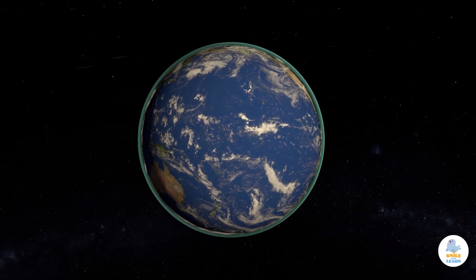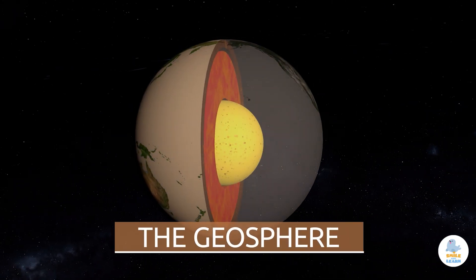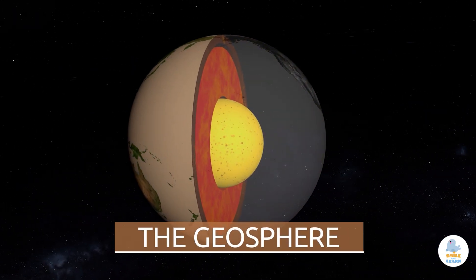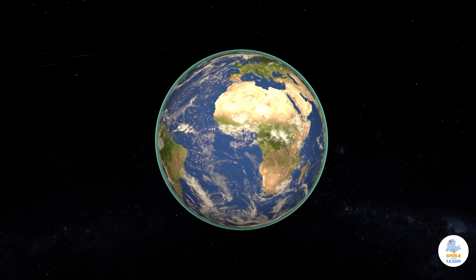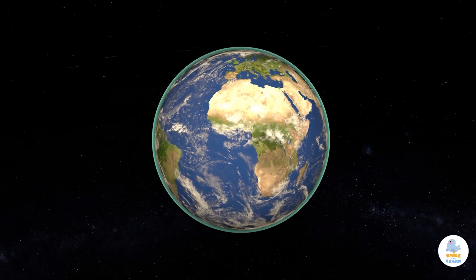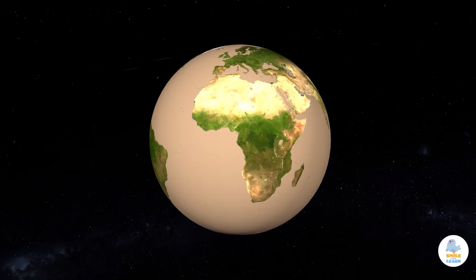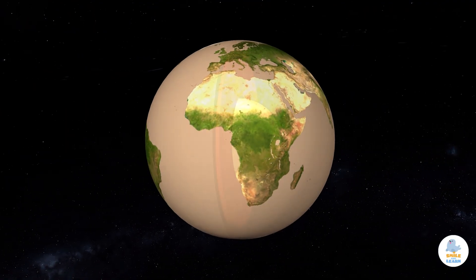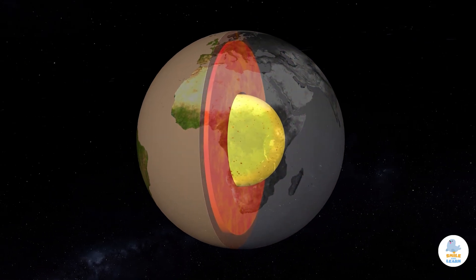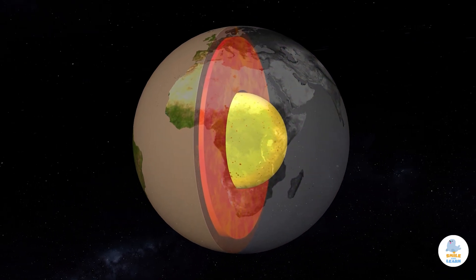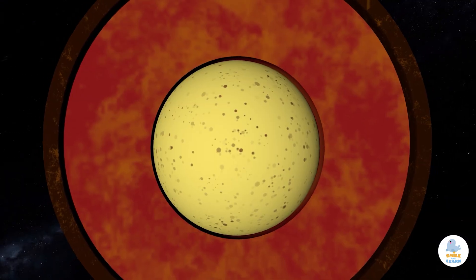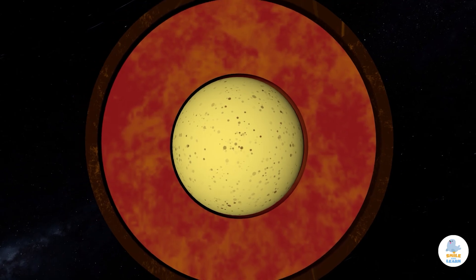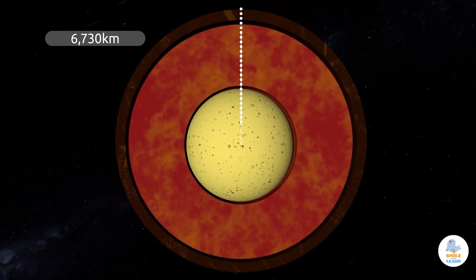Today we're going to learn about the Geosphere. The Geosphere is an inner layer of the Earth, extending from its surface to the inner core of the planet. This layer is made up of solid rock and habitable ground. The thickness of the Geosphere is approximately 6,730 kilometers.